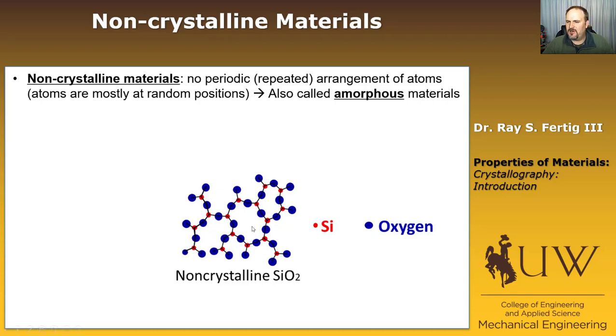And I'm giving you a picture of amorphous material here below. This is non-crystalline silicon dioxide, where the blue atoms are oxygen, the red atoms are silicon, and you can see that they don't have a repeated structure. They're maybe not perfectly random, but they're certainly not ordered in any sense.